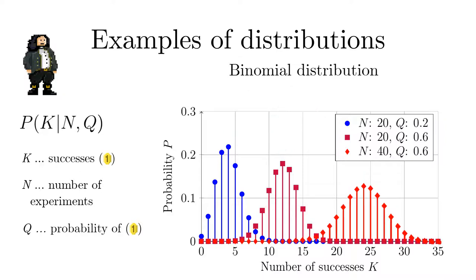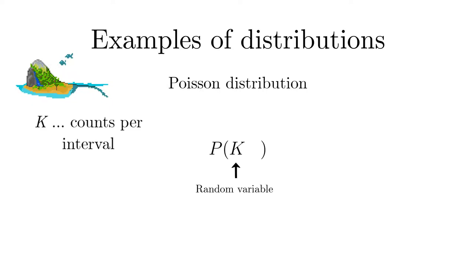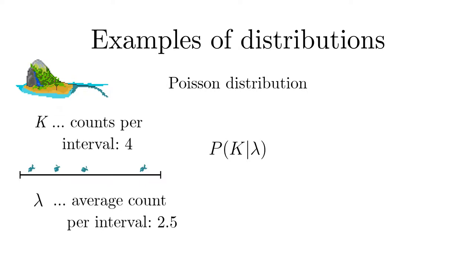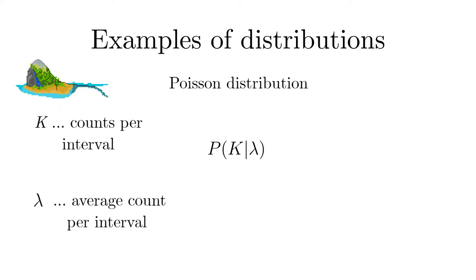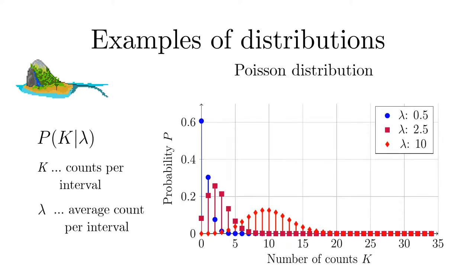The second example is given by the Poisson distribution. It provides the probability for finding k observations of an event in a fixed time or space interval. Here, the average count in that interval is known to be lambda. The Poisson distribution occurs very often in nature, especially in the context of counting experiments, like the number of meteorites striking the earth in a year or the number of photons emitted by a bulb per second.